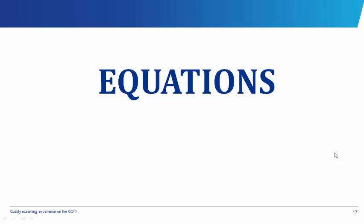Equations. What are equations? A statement that two things are equal is called an equation. For example, we say OB equals a boy. OB is a boy. OB equals a boy means this is said to be an equation, because this equals this.